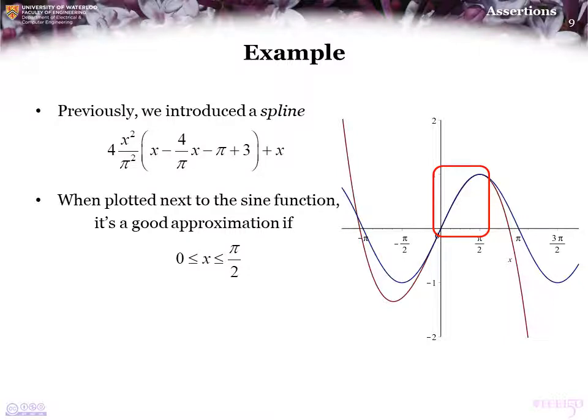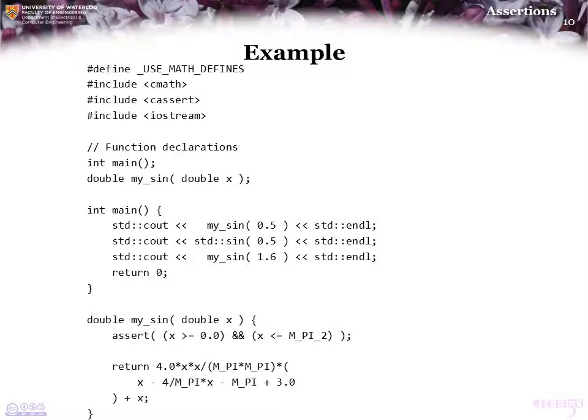Consequently, if we were to use this spline to approximate the sine function, then we should make sure that the argument is never outside this interval from 0 to pi over 2.